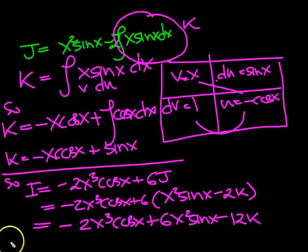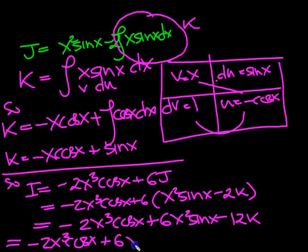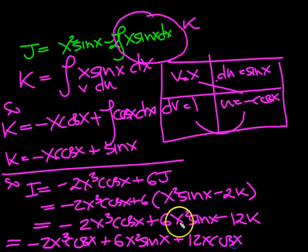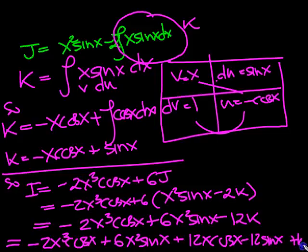So that's equal to then, minus 2x cubed cos x, plus 6x squared sine x, minus 12k. Now k is two terms, so I'm going to run the minus 12 through these. Minus times the minus is a plus, so that's plus 12x cos x. And then minus 12 lots of sine x.